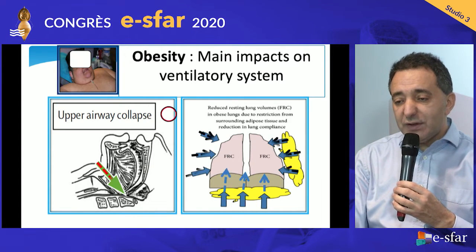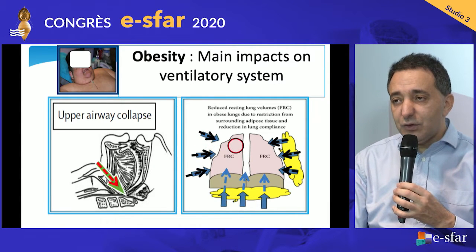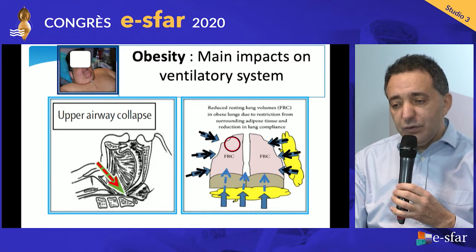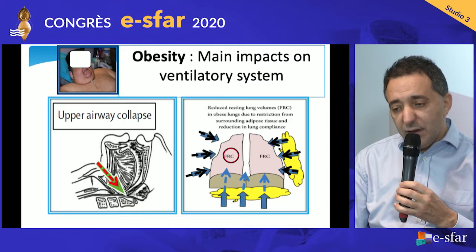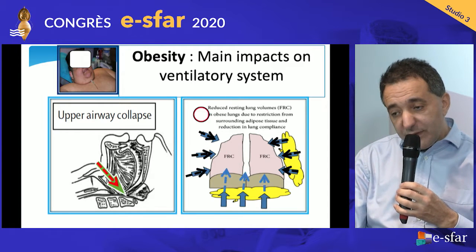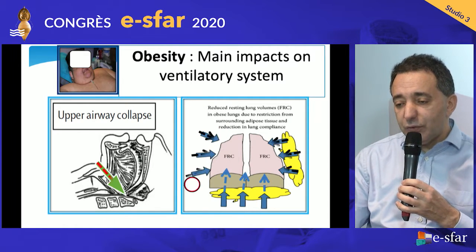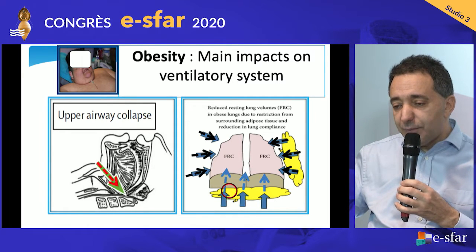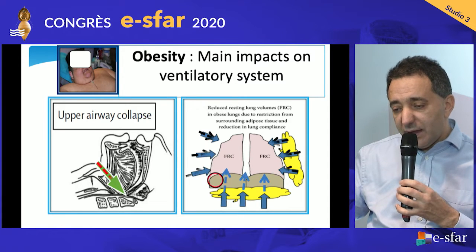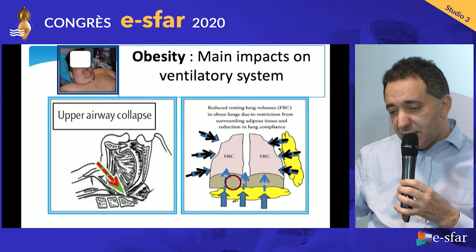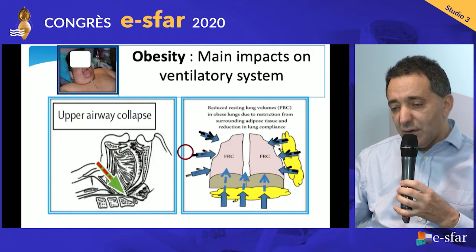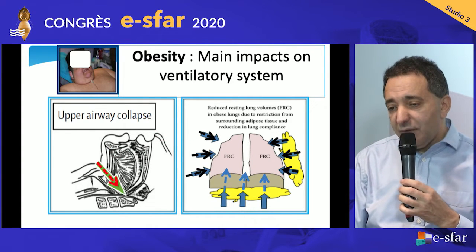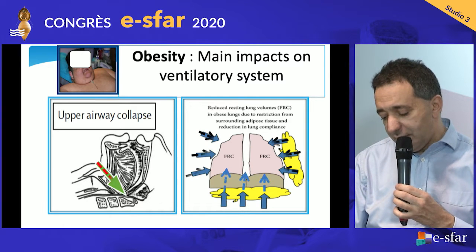The second modification is the restrictive syndrome — a decrease of the whole volume of the lung, mainly the functional residual capacity, due to the fat part of the mediastinum, but also the increase of intra-abdominal pressure pushing up toward the dependent diaphragm part, increasing atelectasis. These modifications are all worsened by the effects of surgery and anesthetic drugs.